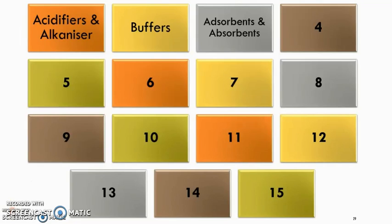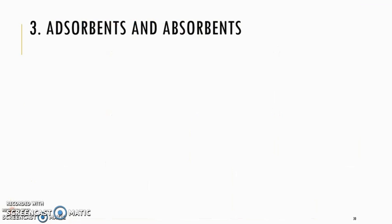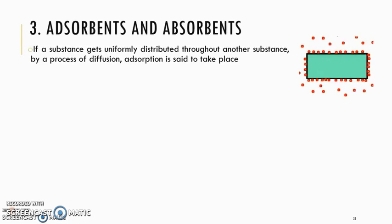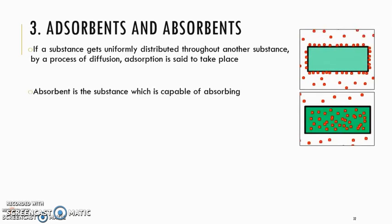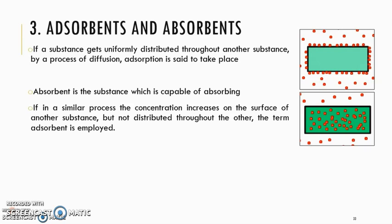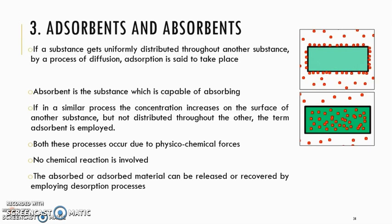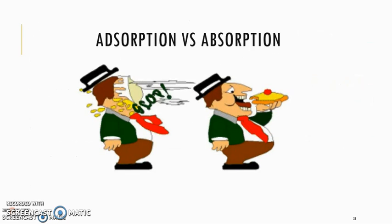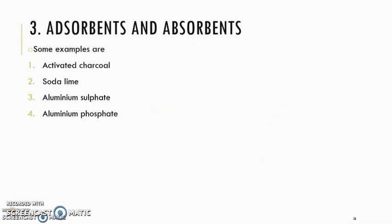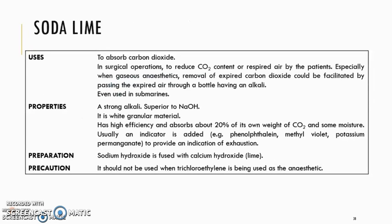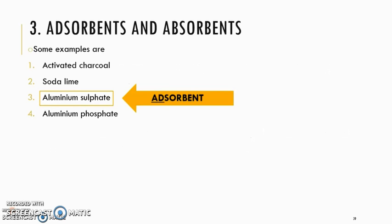Third is absorbents and adsorbents. An adsorbent will make substances stick onto its surface, while an absorbent absorbs the substance into itself. There are no chemical reactions involved during absorption and adsorption. An animation is provided to help understand the difference between the two. The types include soda lime, which is an adsorbent, and aluminum sulfate, which is an absorbent.